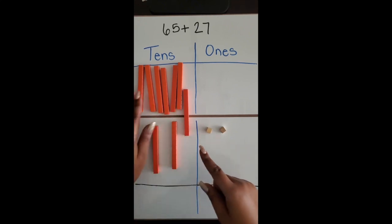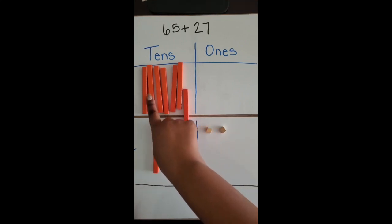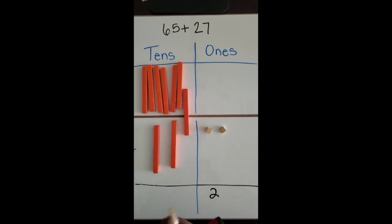Now I'm going to add the 10s all together: 10, 20, 30, 40, 50, 60, 70, 80, 90. So there are nine 10s, which equals 90.